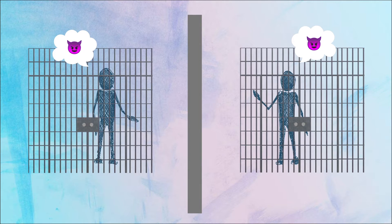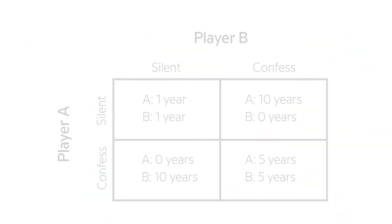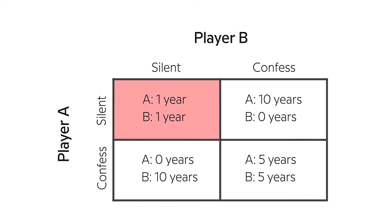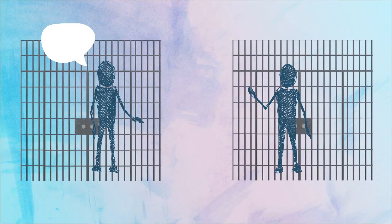So instead, the thought process to reach the Nash equilibrium goes like this. In the case where player B confesses, player A's best choice is to confess as well — this will lead to lesser punishment of five years rather than ten. In the case where B stays silent, A is still better off confessing, as he will be a free man rather than facing a one-year imprisonment if he also stays silent. In either case, A's best option is to confess. Since they're both rational players, B will go through the exact same thought process and reach the same conclusion.